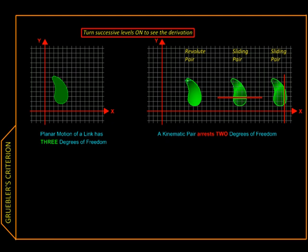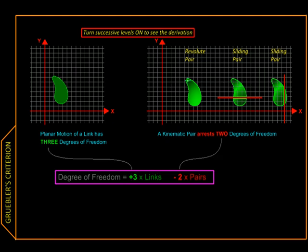We can combine these two conclusions into a single formula for degrees of freedom of a mechanism. Since each link adds three degrees of freedom, we have multiplied the total number of links with plus three.